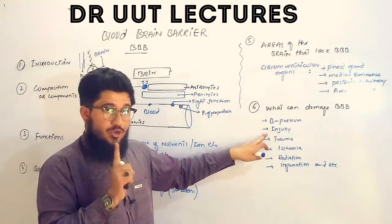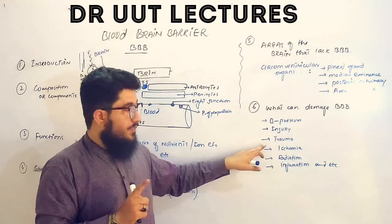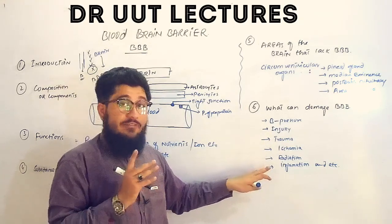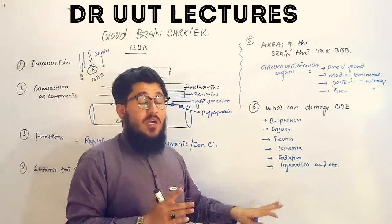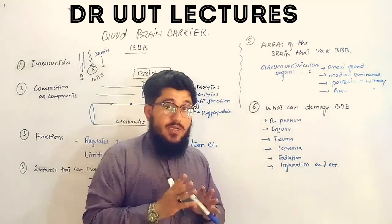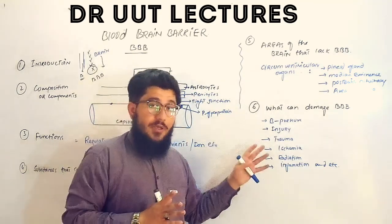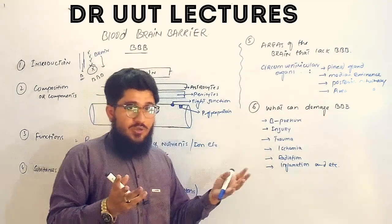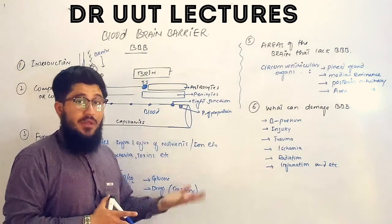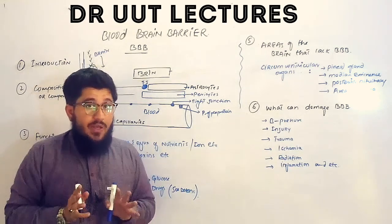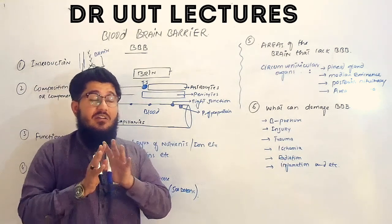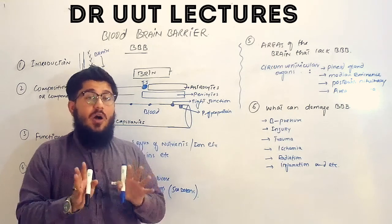The factors that can damage the blood brain barrier include high blood pressure, injury, trauma, ischemia, radiation, inflammation, and some other factors. This is a brief overview of the blood brain barrier.